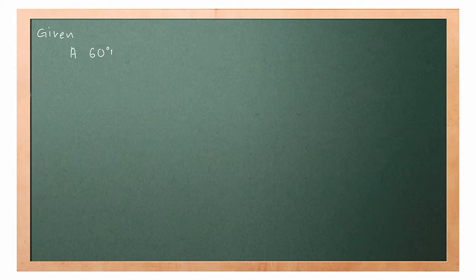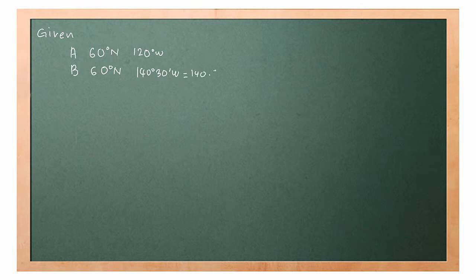In this video I will only explain the method of answering this question. For the theory, check out the video displayed on screen — a link is also available in the description. There are two methods of answering this question. First, we extract the data: position A is at 60°N 120°W and position B is at 60°N 140°30'W, which equals 140.5°W, because 30 minutes divided by 60 equals 0.5°.